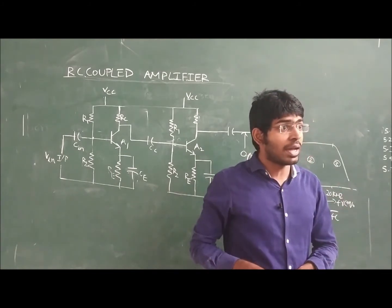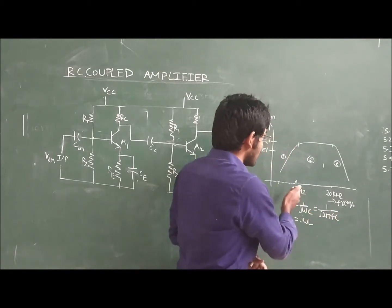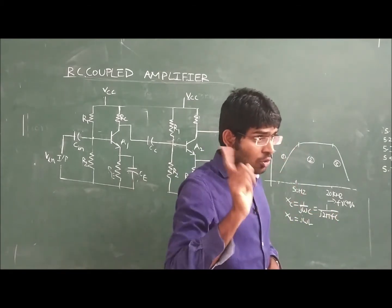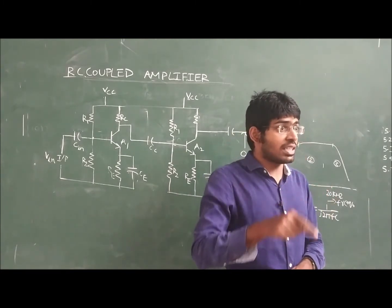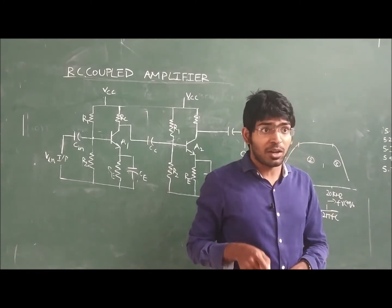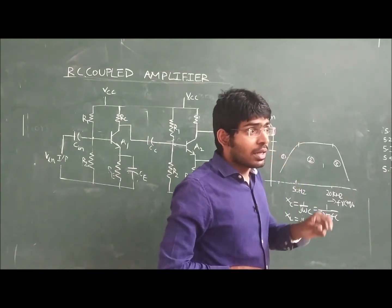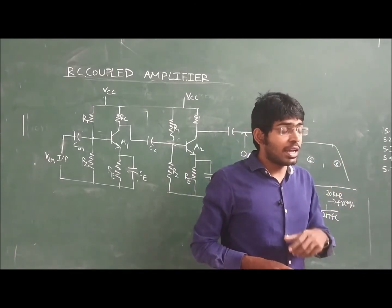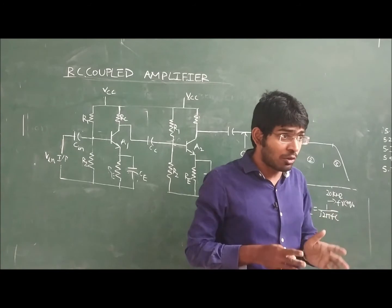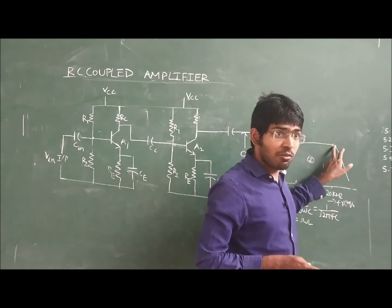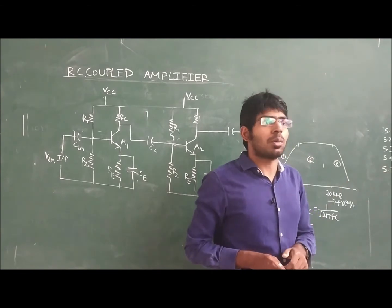If you want to amplify 1 MHz, do not go for the RC-coupled amplifier. If you want to amplify a signal below 50 Hz, do not go for the RC-coupled amplifier. We have also discussed the disadvantages: the gain is only a small amount and may not be sufficient for all practical applications. When we require a very high amount of gain but there is no requirement of high bandwidth, then we can go for the transformer-coupled amplifier.